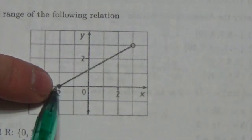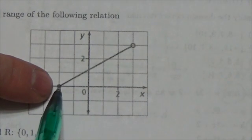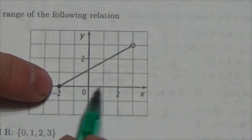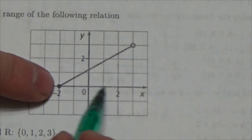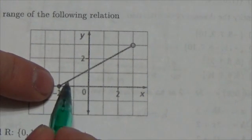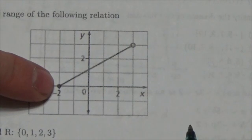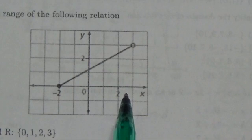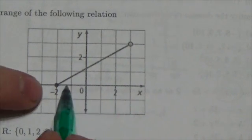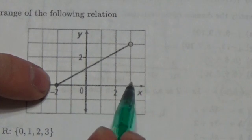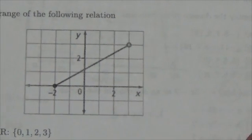It includes negative 2 because it's a filled in circle, but it doesn't include the 3. Now, in order to get this correct, we'd have to list all of the numbers along the x-axis that are being used to create this relation here. But that's impossible. There's an infinite number of them, because I would be referring to all of the real numbers between negative 2 and 3.